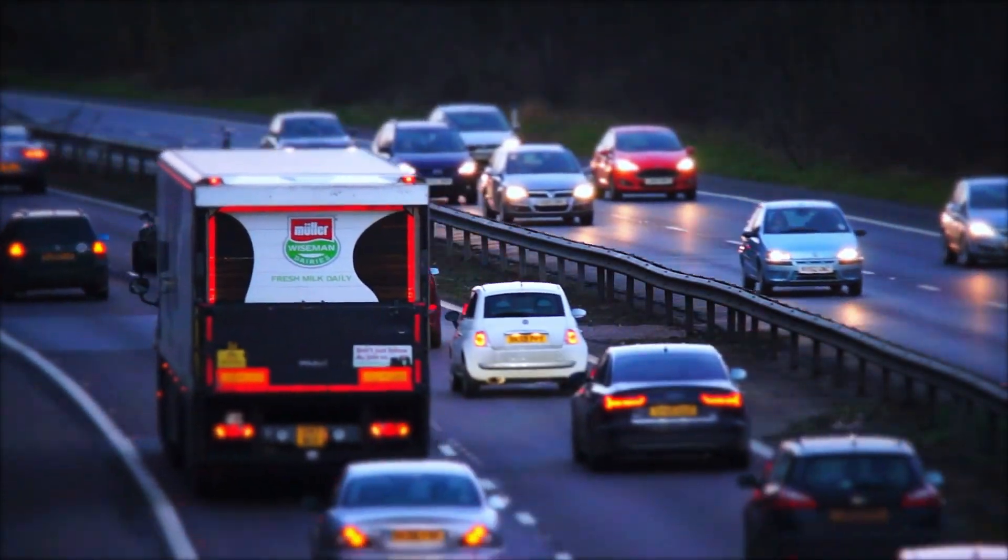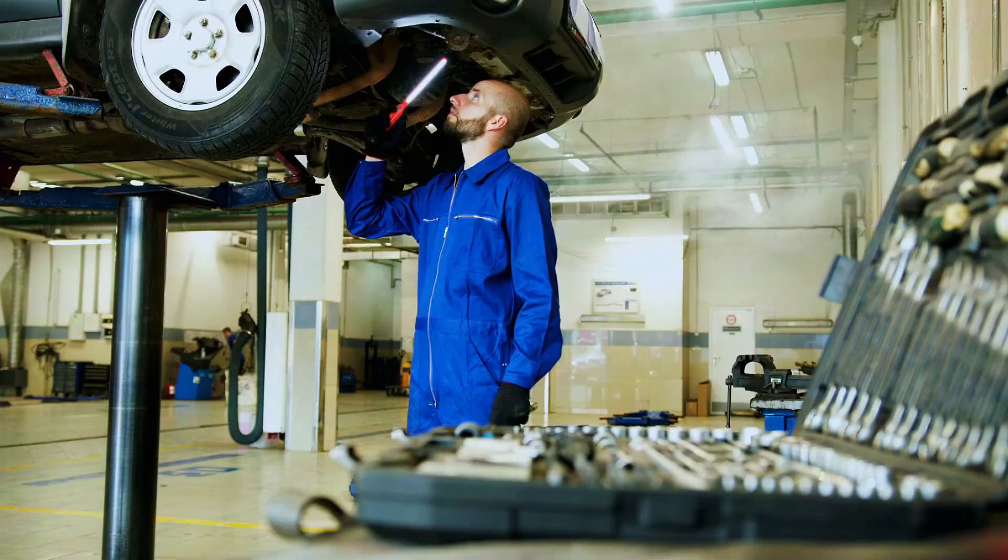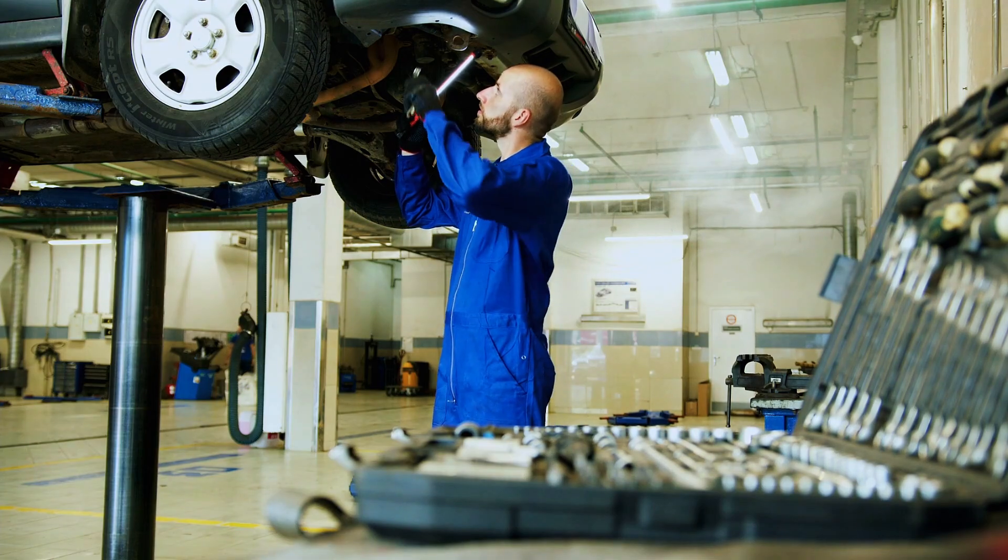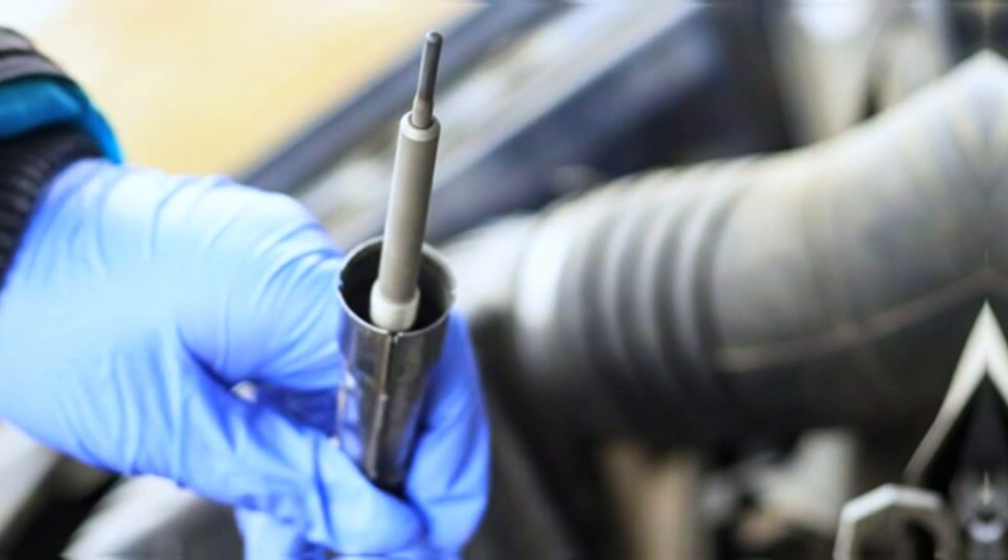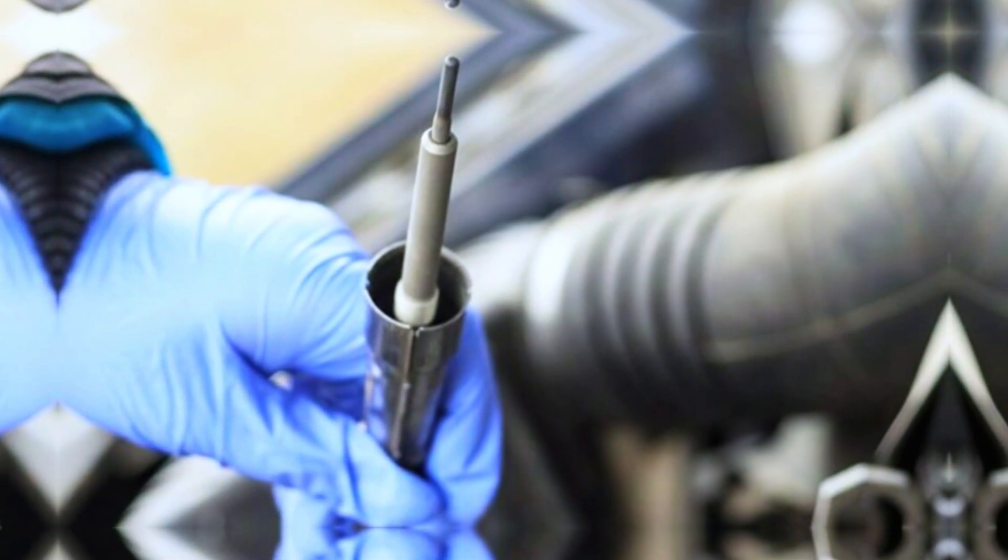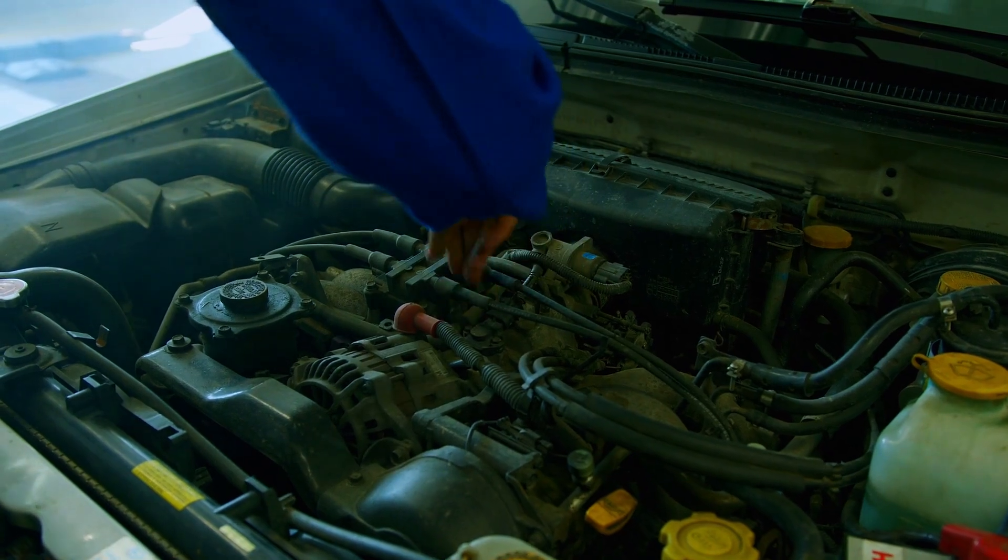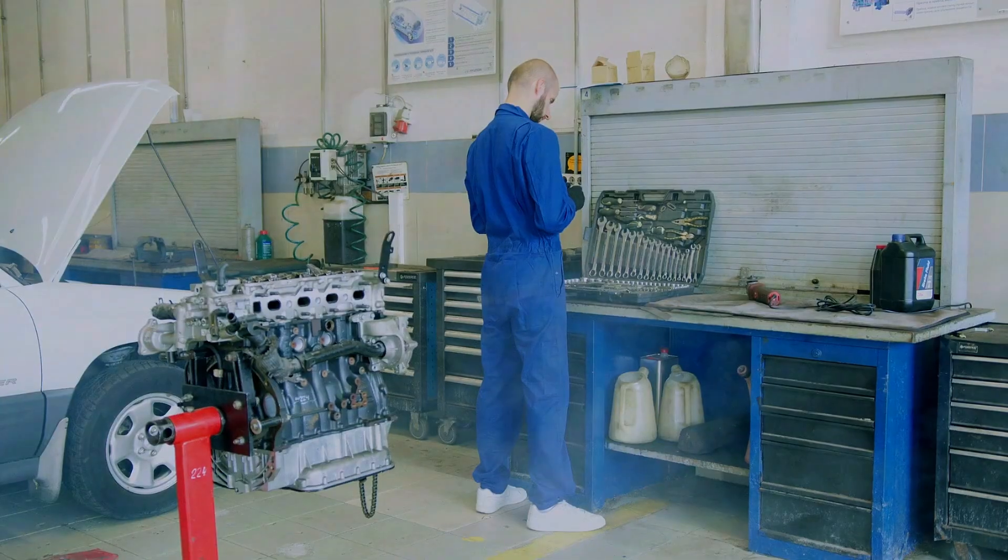Hi everyone, welcome back to Weekly Tools. Today we're tackling a common diagnostic trouble code P0675. This code indicates an issue with the glow plug circuit for cylinder number five. Stick around as we break down the causes, show you how to diagnose it, and walk you through the repair process.